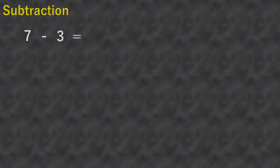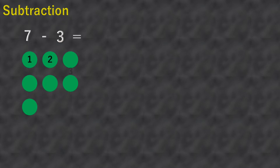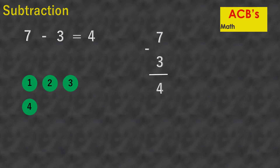First, we subtract three from seven. I'll show it with this illustration. We have seven circles here — one, two, three, four, five, six, and seven. Here are the three circles we're going to subtract. How many circles do we have now? Count them: one, two, three, and four. So seven minus three equals four. I'll rearrange it in vertical position: seven minus three equals four.